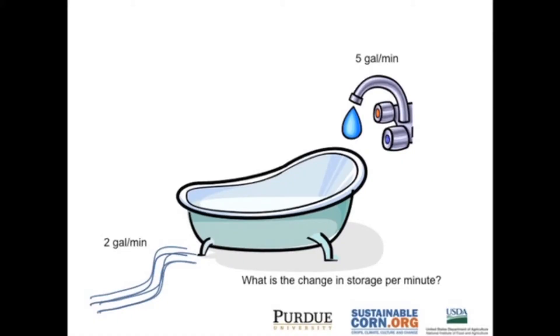To explain that concept, we can start with something that's a very basic control volume: your bathtub. We have a volume defined by the edge of the bathtub, with a virtual surface blocking off the top. I have an inflow of 5 gallons per minute, but I forgot to close the drain, so I have an outflow of 2 gallons per minute. My inflow is greater than my outflow. After one minute, I have three gallons of water in my tub.